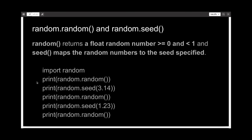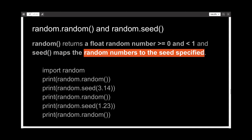The random function will return a random positive float number less than one. The seed maps the random numbers which it generates further on to the seed you have specified as the argument.